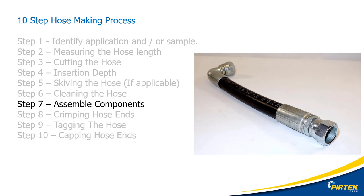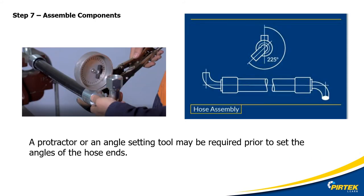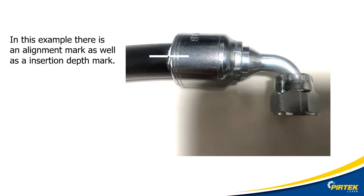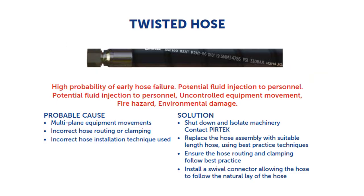Step seven: assemble the components. A protractor, an angle setting tool, or a template may be required to set the angles of the hose ends. I update my stamp template indicating that I have zero angle offset on my hose. If I was setting an angle offset, I can add an alignment mark to my hose — so we'll have a hose insertion depth mark and an alignment mark. Unintended twists in hose can be caused by misaligned hose ends.